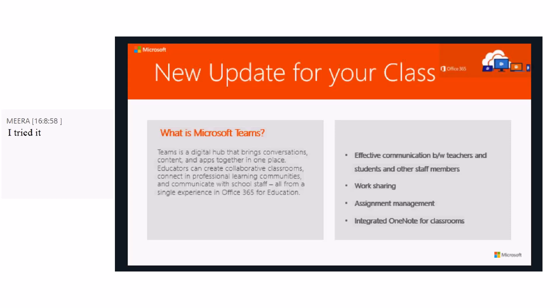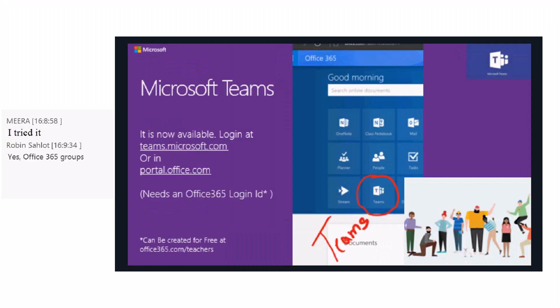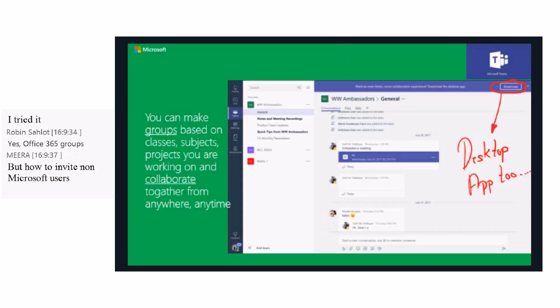Microsoft Teams is available on multiple platforms — on desktop and on your mobile phones as well. The simplest method is to go to teams.microsoft.com or log into portal.office.com. You need an Office 365 ID for that, and most of you must already have one. If not, you can go to office365.com/teachers and get one for yourself and your students as well.